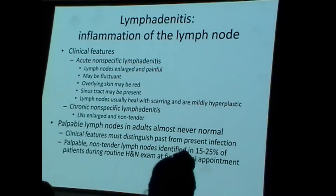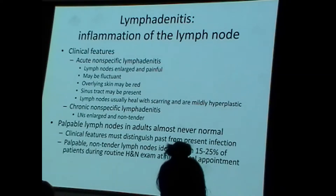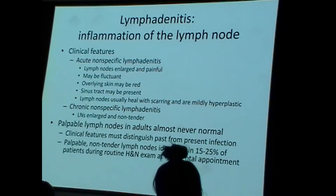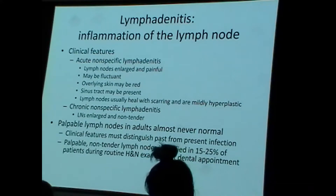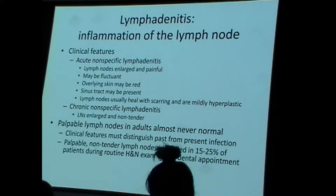Many people have a couple of those lymph nodes. If you were sick once upon a time as a kid, your lymph node enlarged due to acute nonspecific lymphadenitis infection, and then regressed back in size but incompletely — remaining a little enlarged because of some fibrotic scarring. For the rest of your life there's a lymph node that remains palpable — chronic nonspecific lymphadenitis.